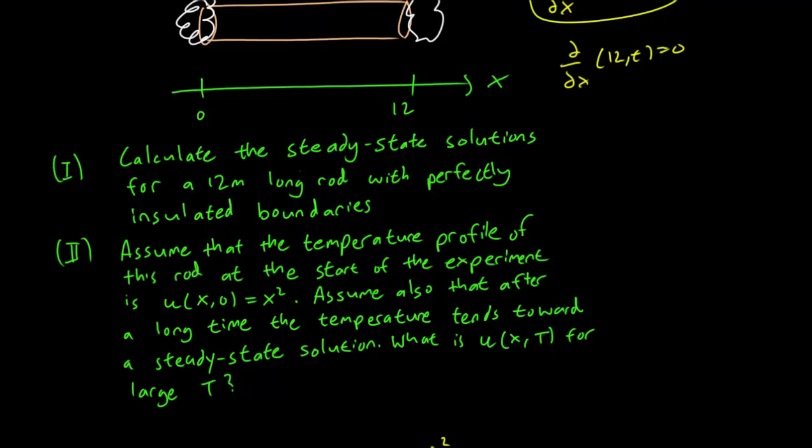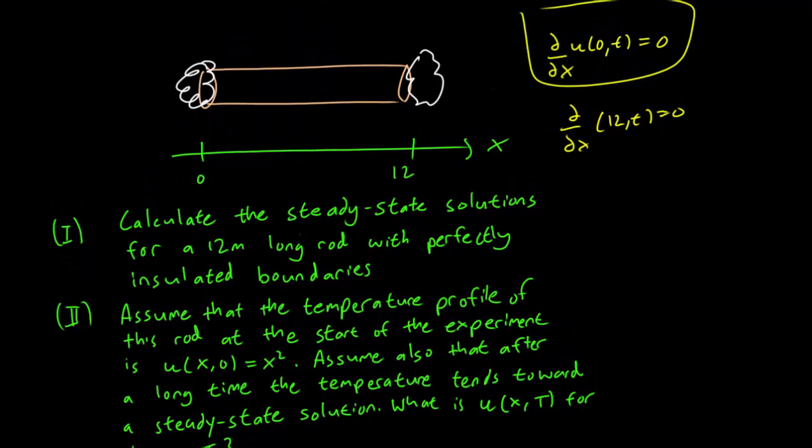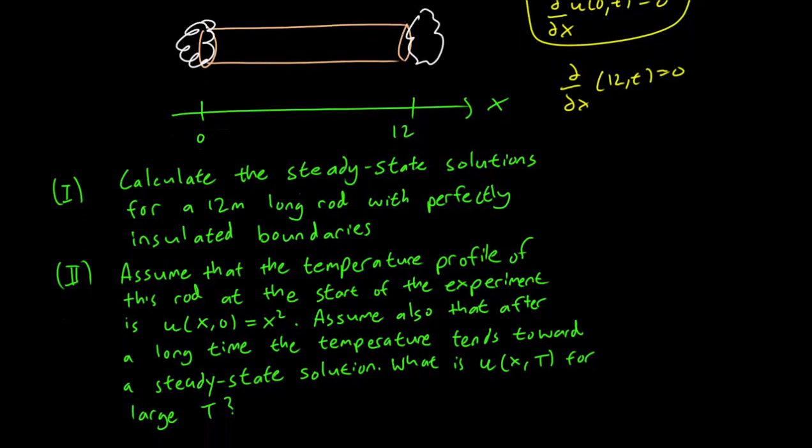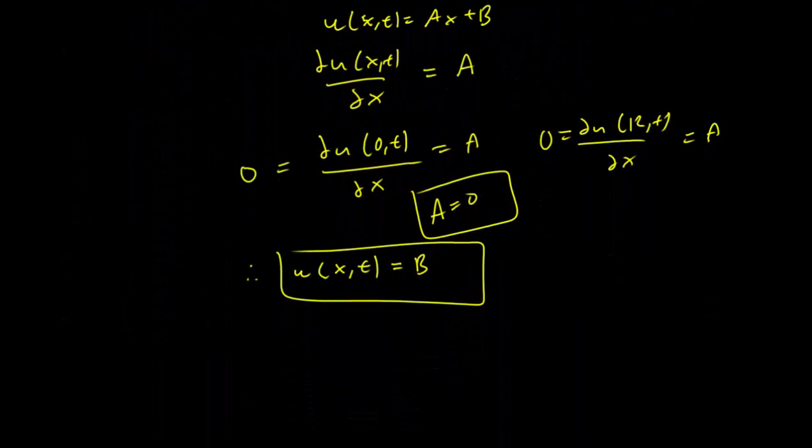So let's look at the second part of the problem. If we assume that the temperature at the start of the experiment is u of x,0 equals x squared, it means at the start of the experiment, the left end has temperature of 0 Celsius, and the right end of the rod has temperature 144 Celsius. We assume also that after a long time, the temperature tends toward the steady state solution. Now, what is the steady state solution it tends to? That's the question we're asking, and we can use what we've done previously. We know that the steady state solution is a constant, and we need to ask what constant?